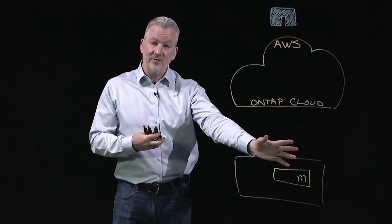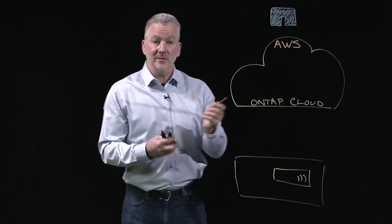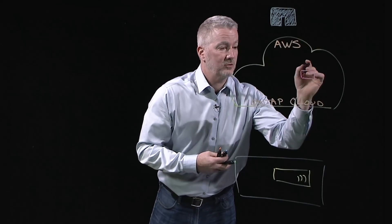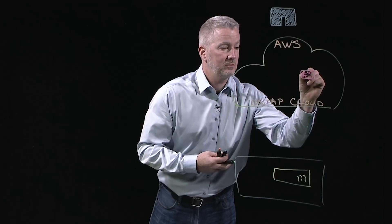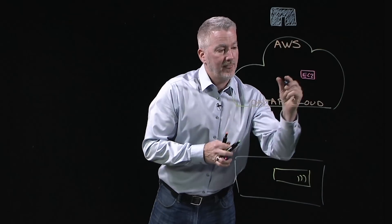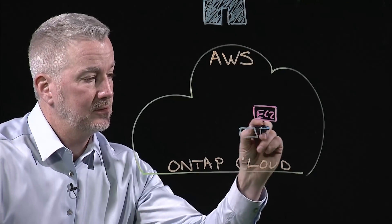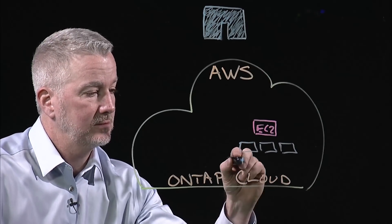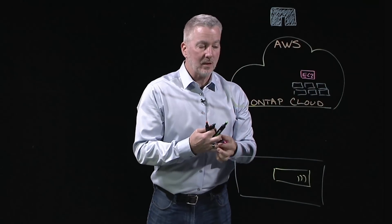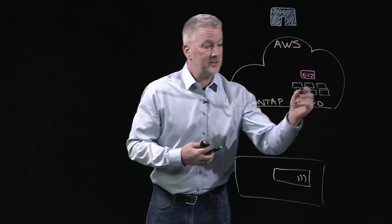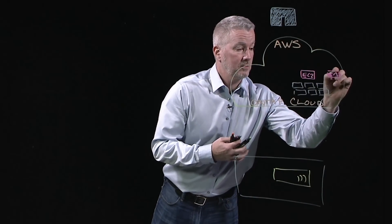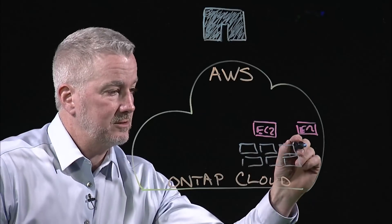Instead of having physical appliances, you actually use native public cloud resources. This is where you have a virtual machine, or your EC2 compute, and your underlying elastic block storage, or EBS, and scale that up however much you need. If you want a high availability system, you deploy another node.